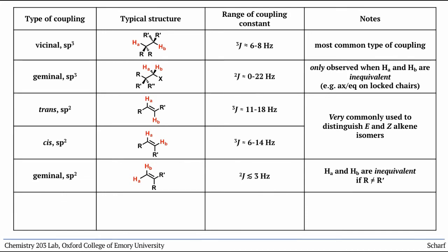Finally, long range coupling is often seen in aromatic rings, most commonly 4J coupling between hydrogens that are meta to one another. Because of the relatively large distance between the protons, this is usually quite small, 1 to 3 Hertz. Rarely even longer range coupling, such as 5J coupling, is also observed in aromatic rings.